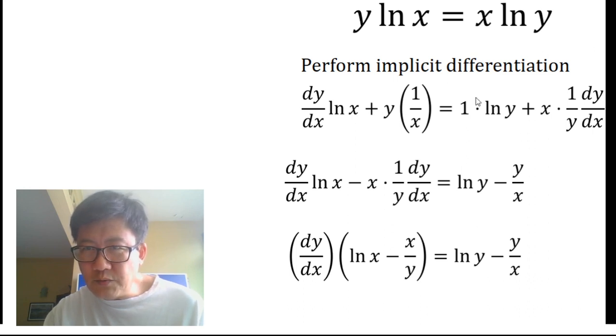On the right side, we differentiate x and leave natural log of y, plus we leave x and differentiate natural log of y, which gives us 1 over y dy/dx.